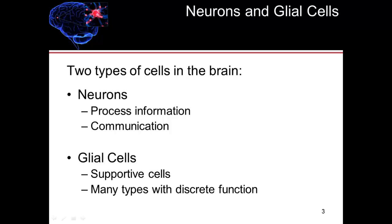It should also be noted that neurons do not have the ability to divide. So once you destroy a neuron, you cannot replace it through cell division, because neurons don't undergo cell division. Glial cells, however, do have the ability to undergo cell division and replace cells that have died.